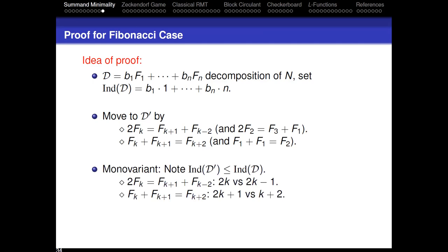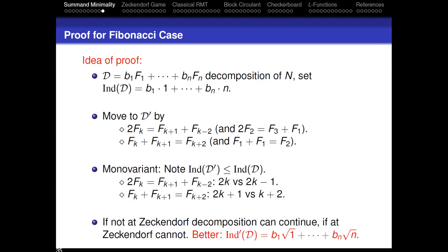It turns out that every time you do a legal move — one of these two moves — your index never grows. It either stays the same or gets smaller. This is just a simple calculation: replace two copies of Fₖ with Fₖ₊₁ plus Fₖ₋₂ and do the algebra. You can use this to show that no matter what initial decomposition you start with, eventually you will end up with the Zeckendorf decomposition. A better monovariant is not just the weighted sum of indices but the weighted sum where you multiply by the square root of the index, which makes the decrease strict rather than non-strict.